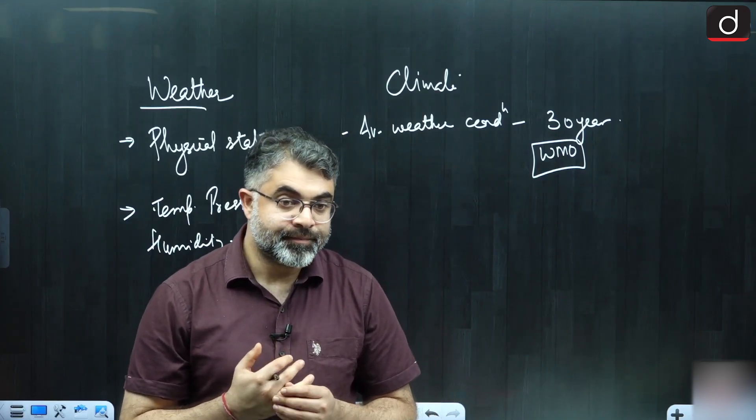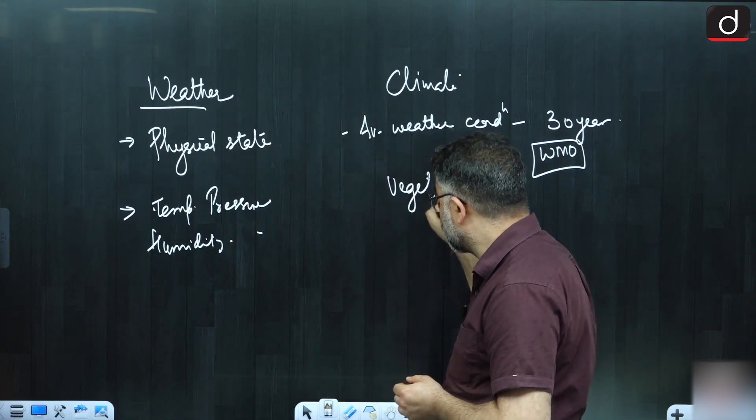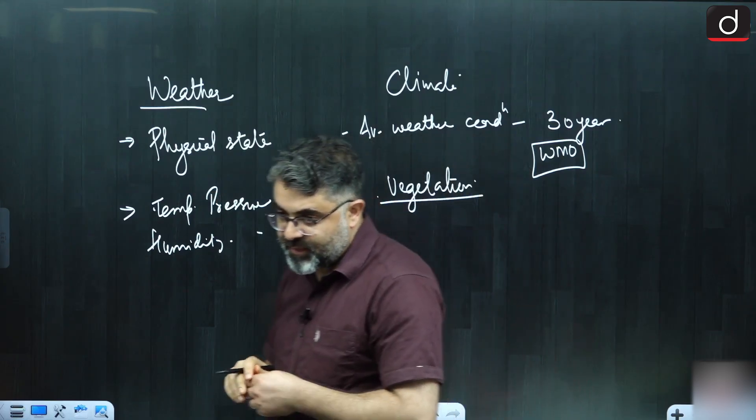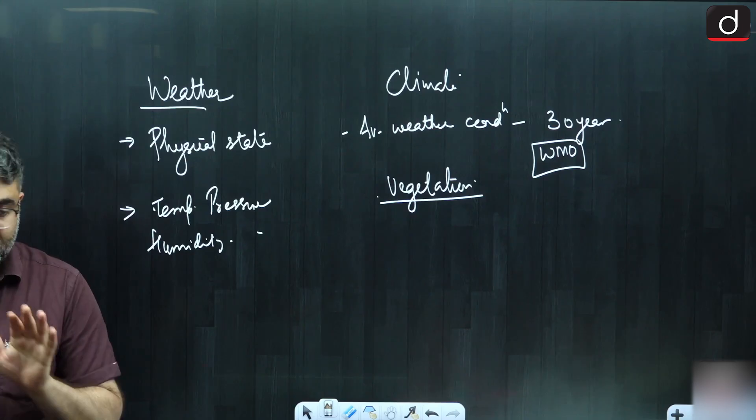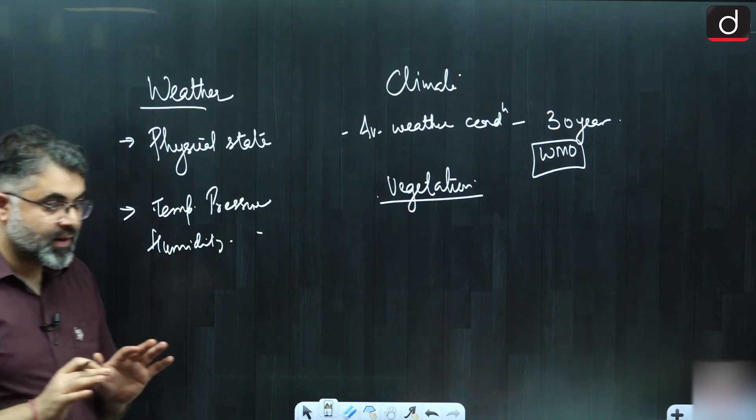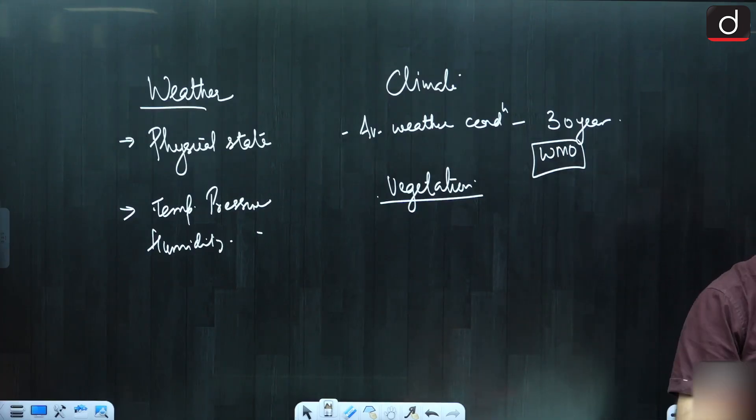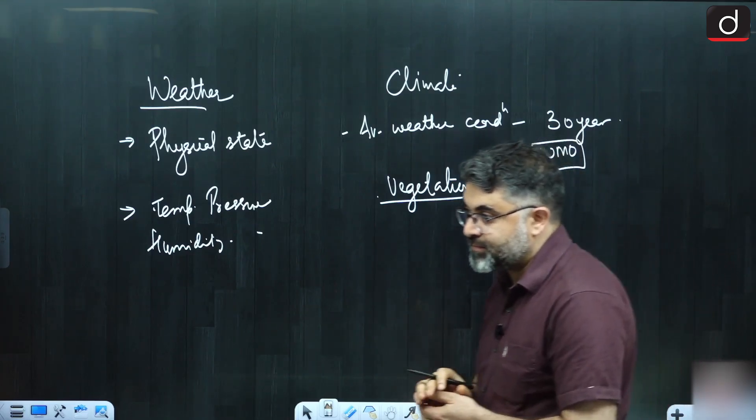Then what is our way? Look at the vegetation, natural assemblage of plants - vegetation. Not all the plant cover, not all the tree cover, but the vegetation. Vegetation is the direct representation of climatic condition.